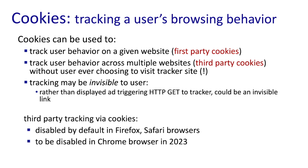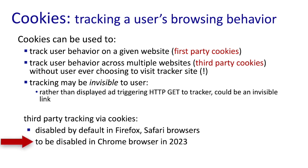Third-party cookies have been used for user tracking for well over a decade. As privacy concerns started to mount, the default for Firefox and Safari browsers was changed to disable third-party cookies. Google had planned to change Chrome's default to also disable third-party cookies in 2022, but that's been pushed out to 2023.